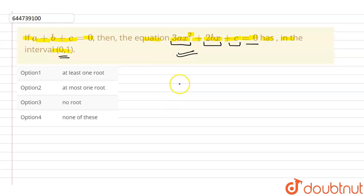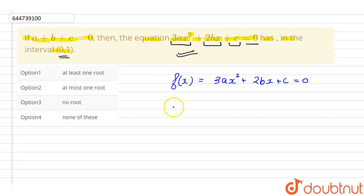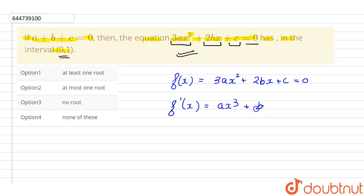Let us suppose the function given to us is f(x) = 3ax squared plus 2bx plus c equals 0. The antiderivative of this particular function, which we will call F(x), will be equal to ax cubed plus bx squared plus cx. This is the antiderivative.